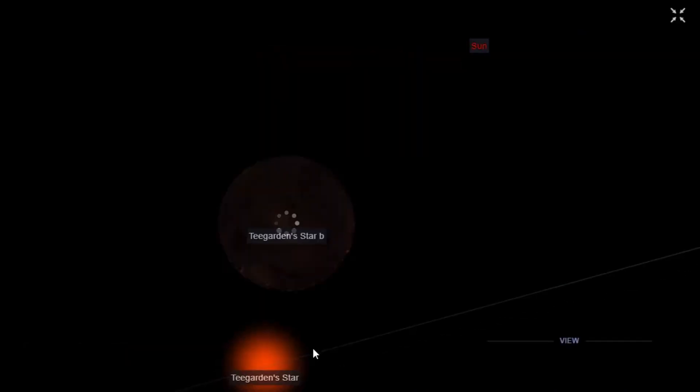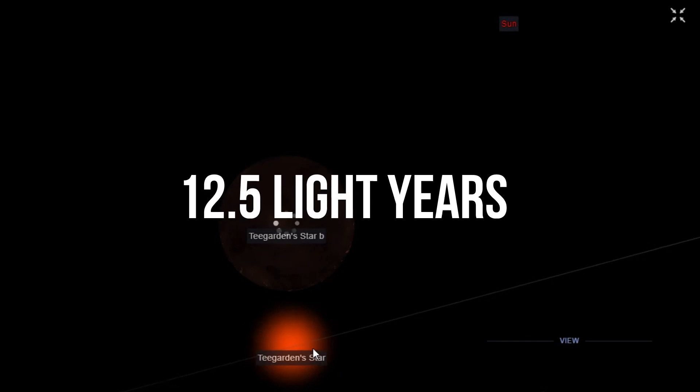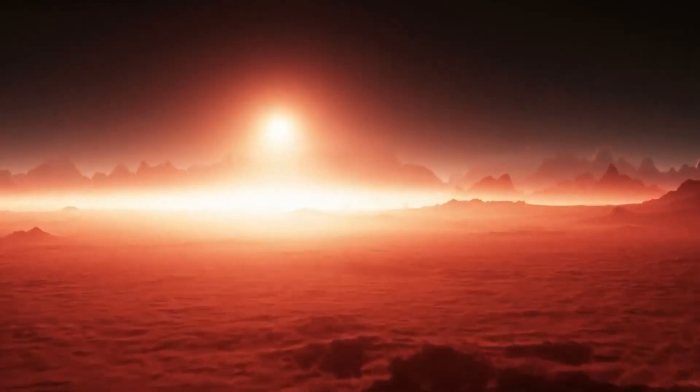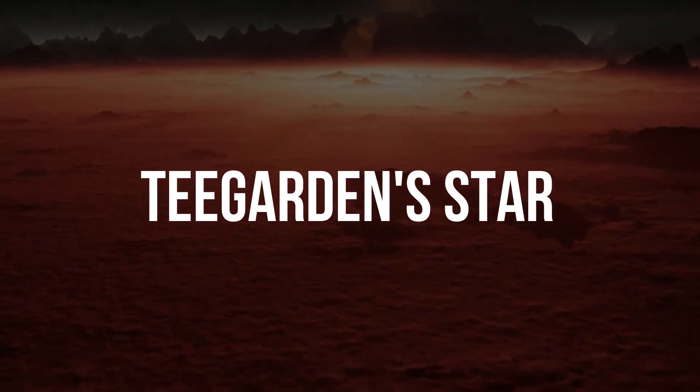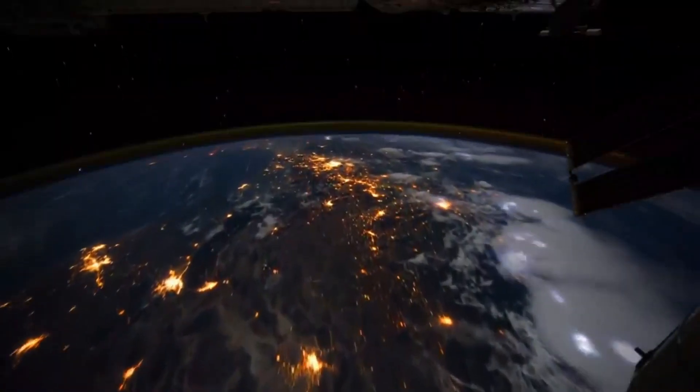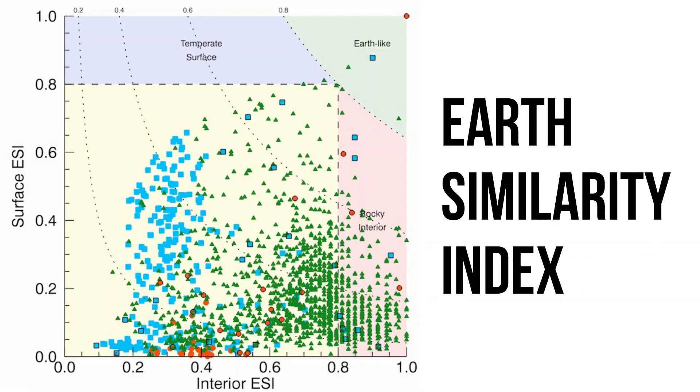In the year 2019, an Earth-like planet orbiting 12.5 light-years away from us around a red dwarf, namely Teegarden star, shared 95% resemblance to Earth on the Earth Similarity Index.